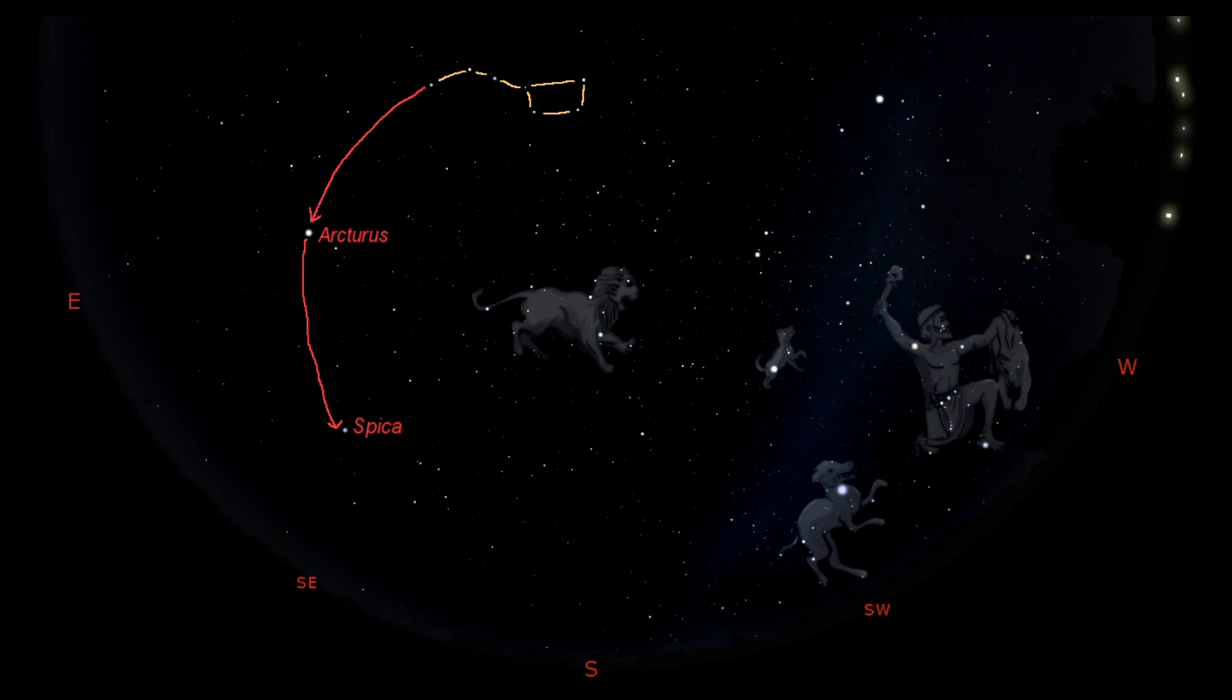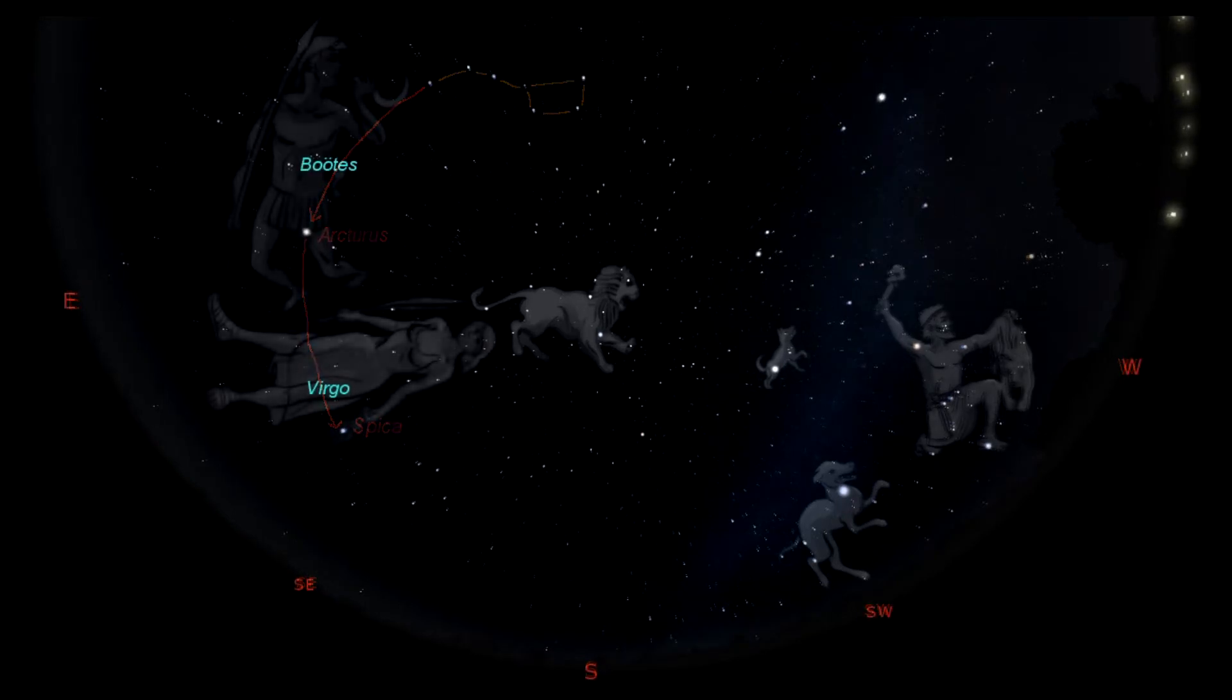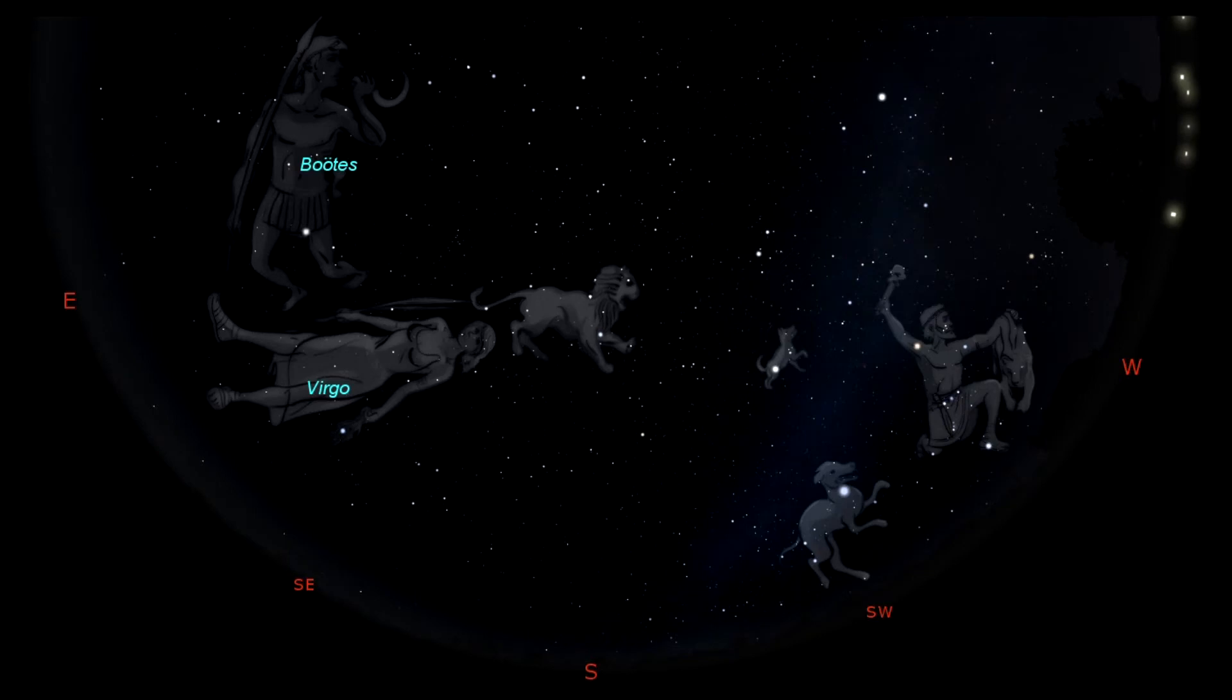Although some people like to say spike to Spica, to help them remember the name. The star Arcturus is in the constellation Boötes, the Herdsman, while Spica is in the constellation of Virgo, the Maiden. So we add them to our collection of constellations that we can see in our evening sky.